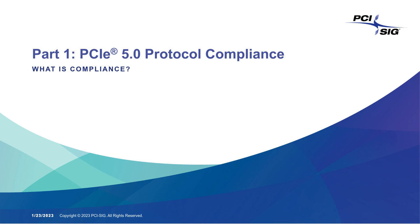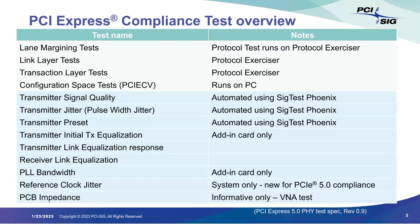I'll cover PCI Express Protocol Compliance first. There are many different groups of tests within the compliance program, all required to be included on the integrators list. This testing is done at compliance workshops. The top four groups include lane margining, which uses an exerciser tool; link layer tests and transaction layer tests, which use a Protocol Test Card (PTC) exerciser tool; and the configuration space test, which is a software tool that runs on a PC. Anthony will cover the electrical section in detail.